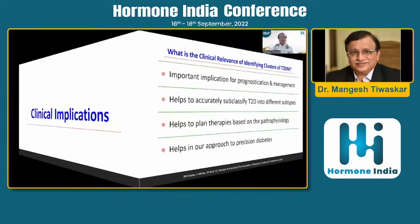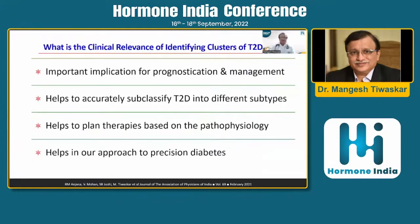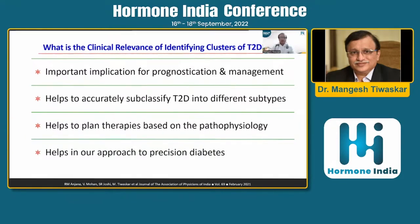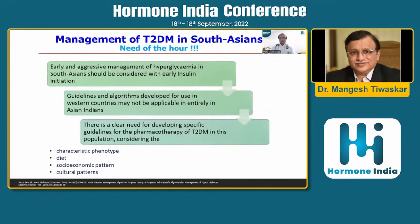In the last two minutes, I will speak about the clinical implications. It is important to understand the relevance of these clusters because it helps in prognostication and in choosing the right therapeutic interventions for diabetes management. Dr. Anupama's paper beautifully highlights that we need India-specific guidelines and algorithms developed for our population, suitable for our country — separate from global guidelines.